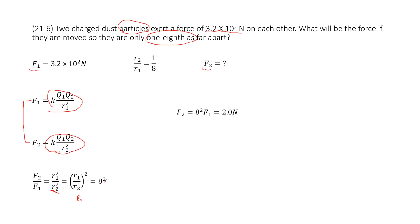So write it there, 8 squared. Now we can write the equation: F2 equals 8 squared times F1. Input F1, we get the answer there. Thank you.